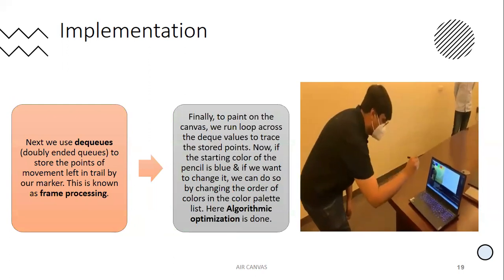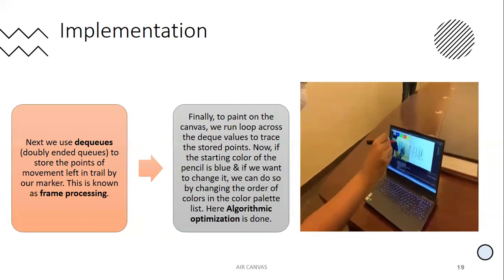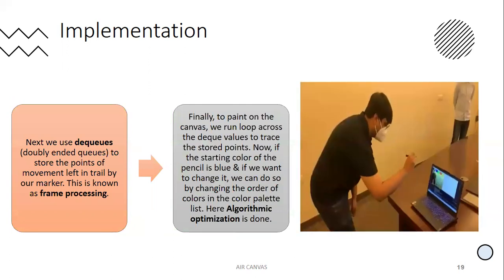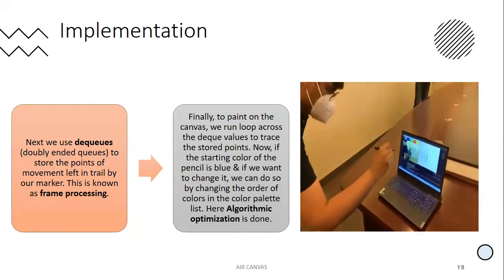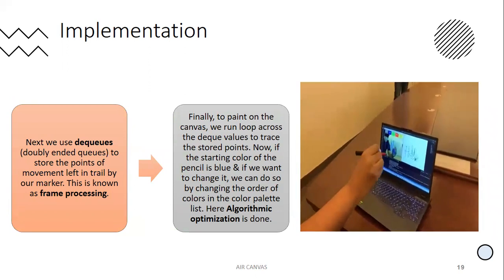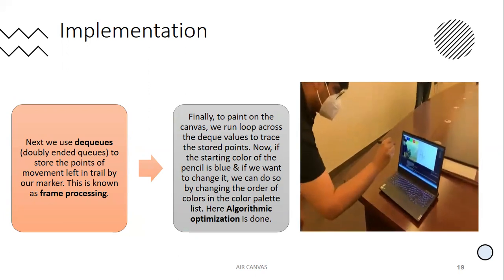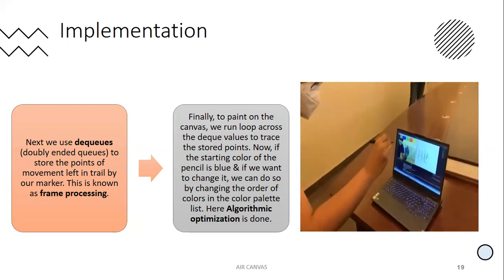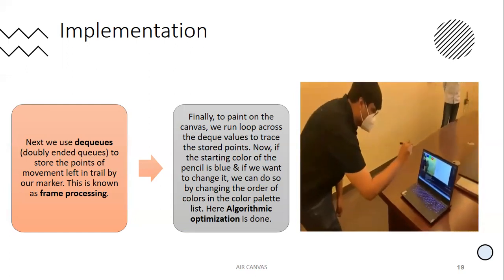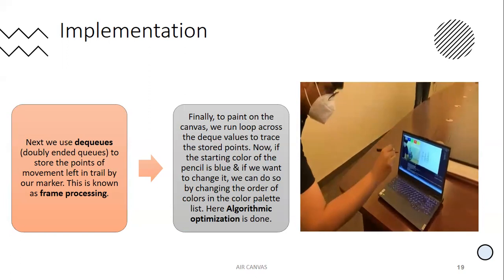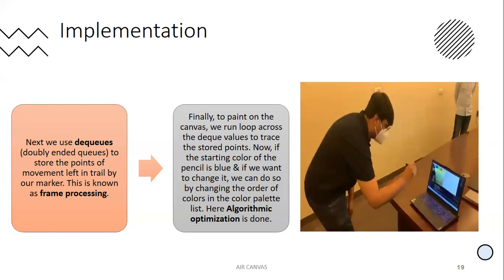After that, we use a data structure called deques (DQs) in order to store the points of the movement trail left by our marker. This is the stream processing step. Finally, to paint on the canvas, we run a loop across the DQ values to trace the stored points. If the starting color of the pencil is blue and you want to change it, you can do so by changing the order of colors in the color palette list. Here, algorithmic optimization is done. On the right side, you can see a person waving their hands in the air, able to write on the screen freely — this is the demonstration and exact output of our project.